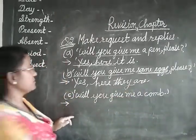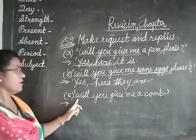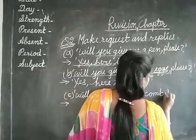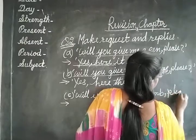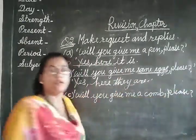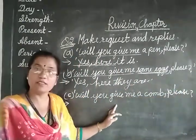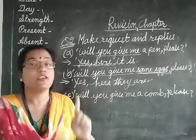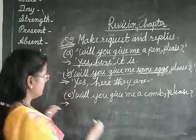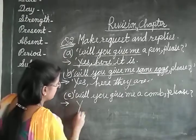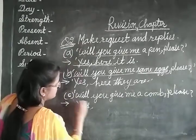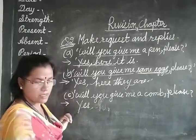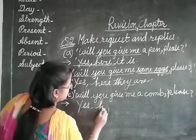Next question: 'Will you give me a comb please?' A comb — one comb. Our reply: 'Yes, here it is.' Since it is singular — one comb — we use the pronoun 'it' and the helping verb 'is.'